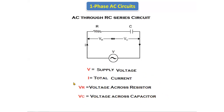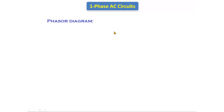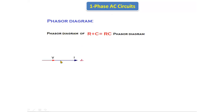Vc is the voltage across the capacitor. These are all the parameters in the RC series circuit. If we see the phasor diagram — the phasor diagram of R and the phasor diagram of C — and if we combine both phasor diagrams, we will get the RC phasor diagram. In the phasor diagram of R, voltage and current are in the same phase. For the capacitor, current leads the voltage by 90 degrees.